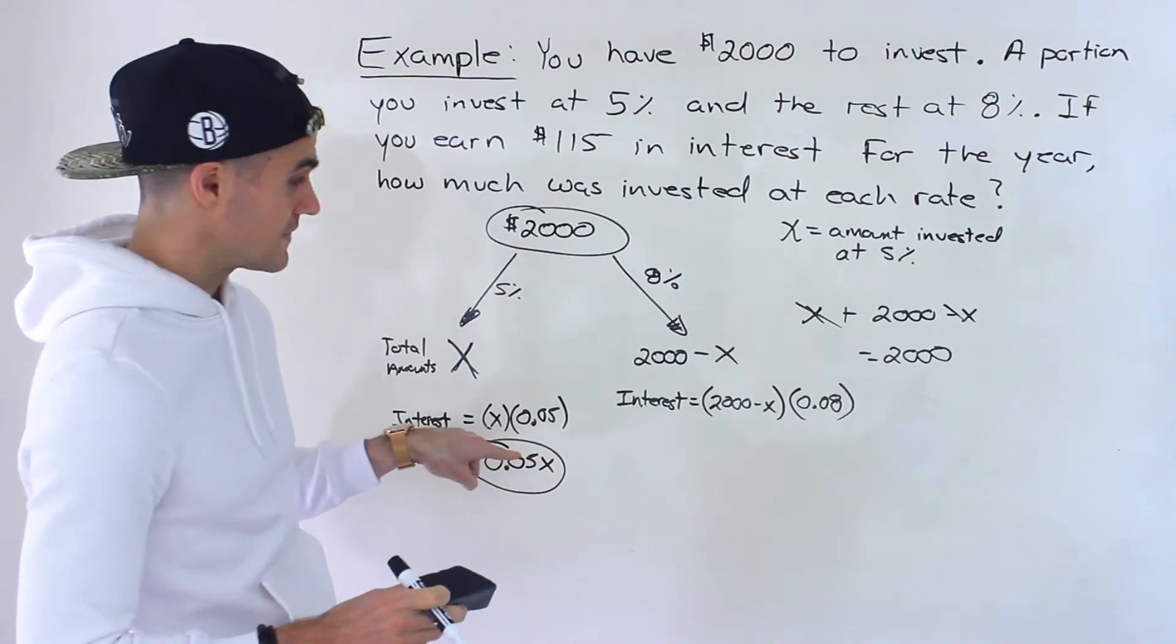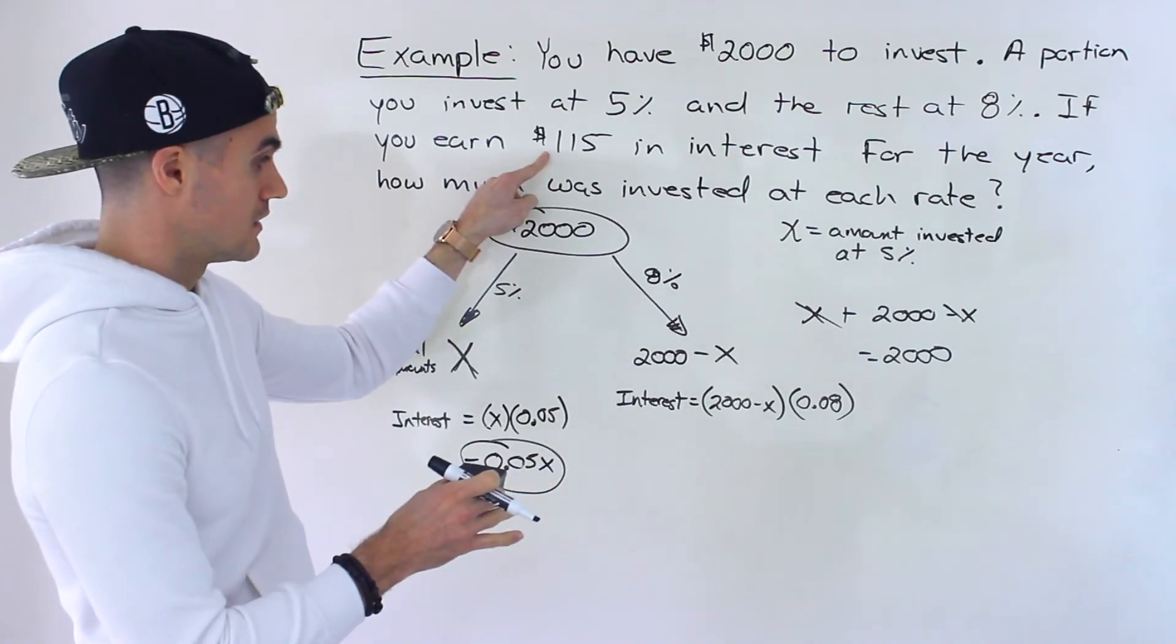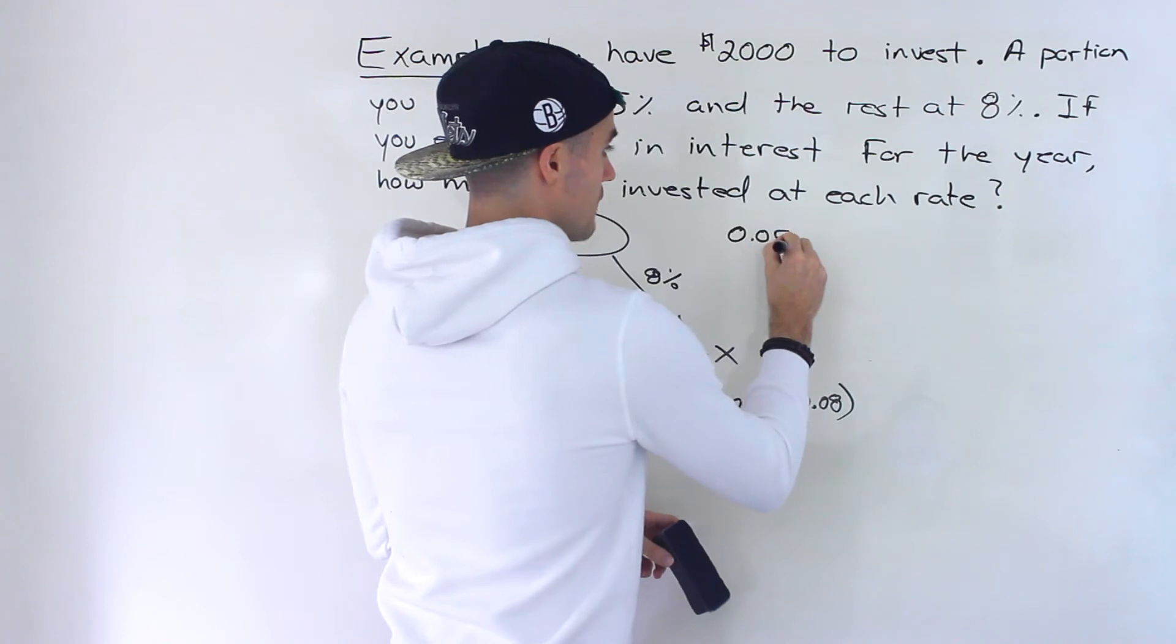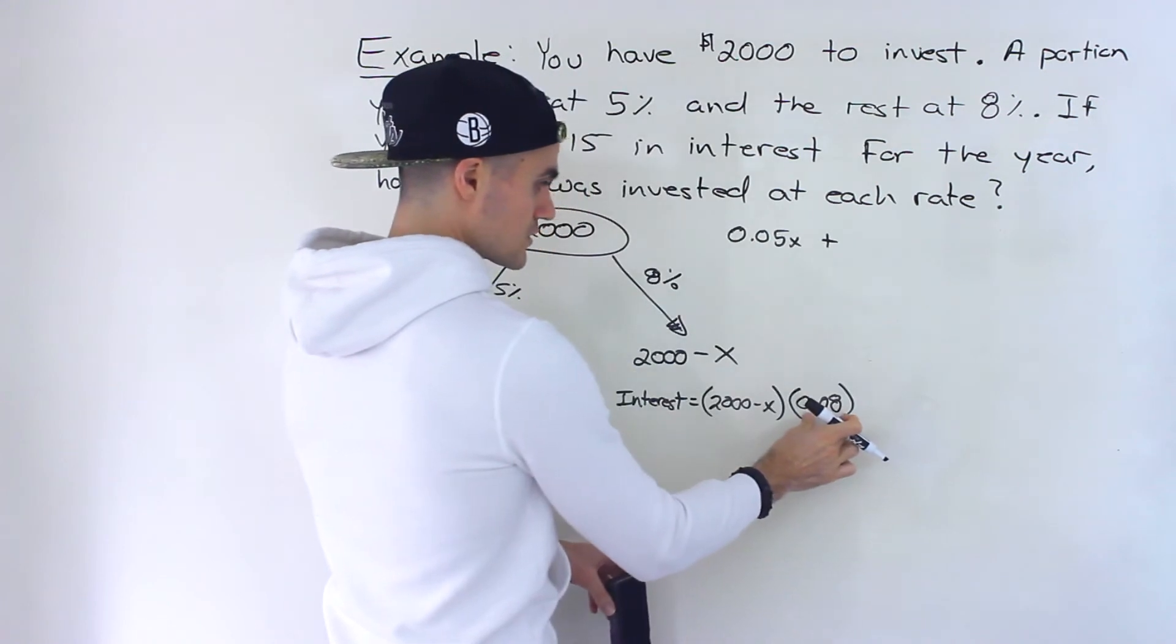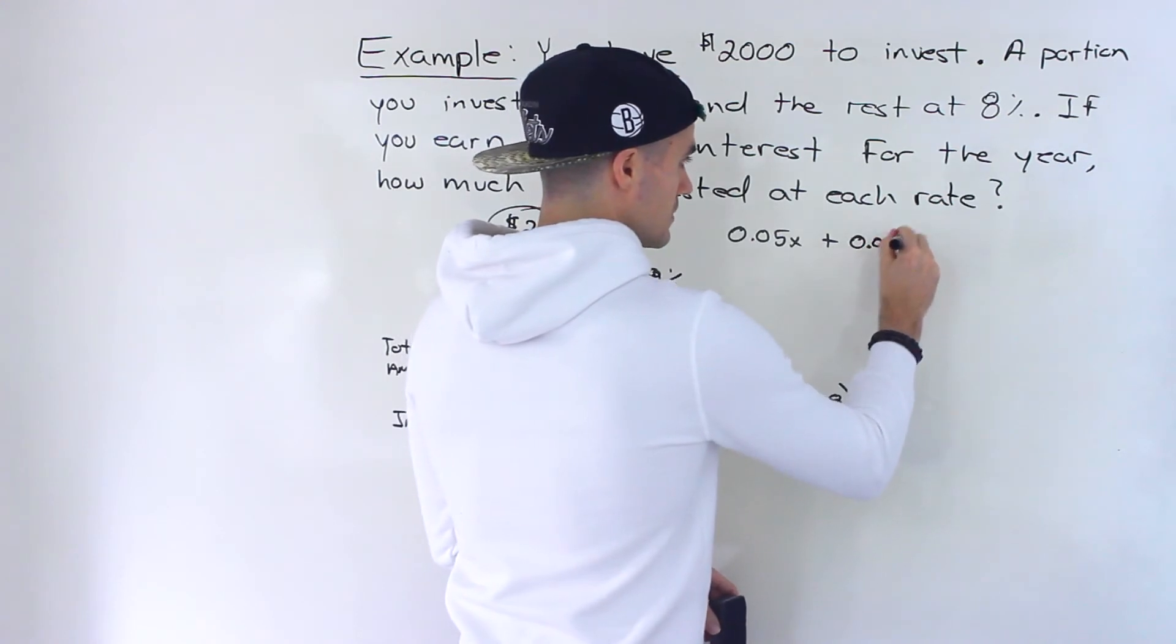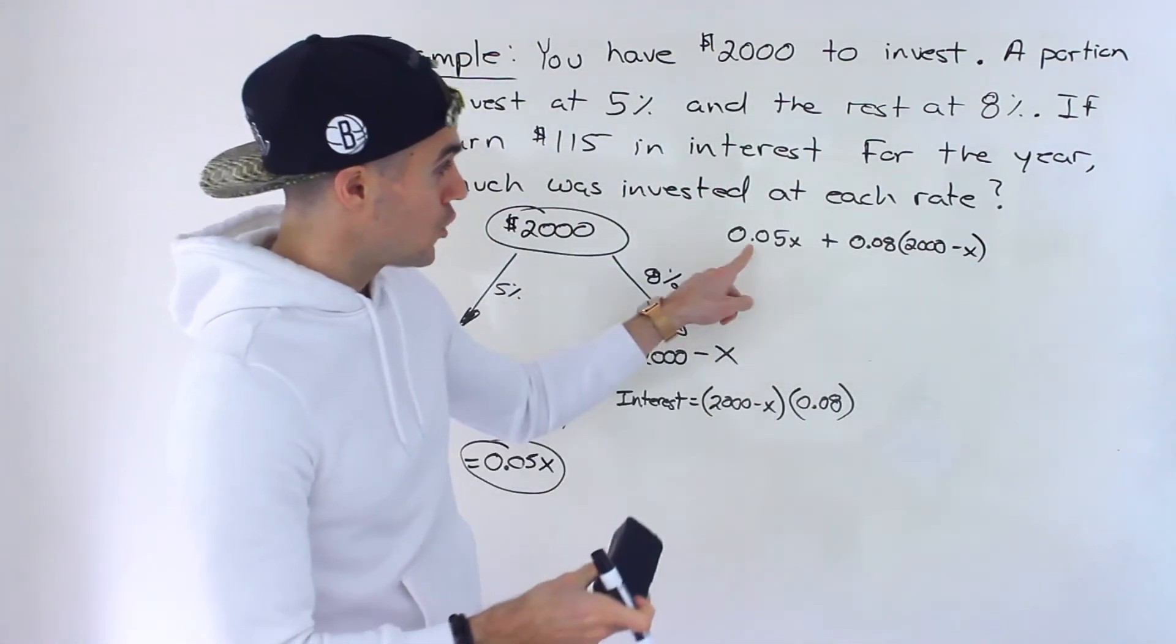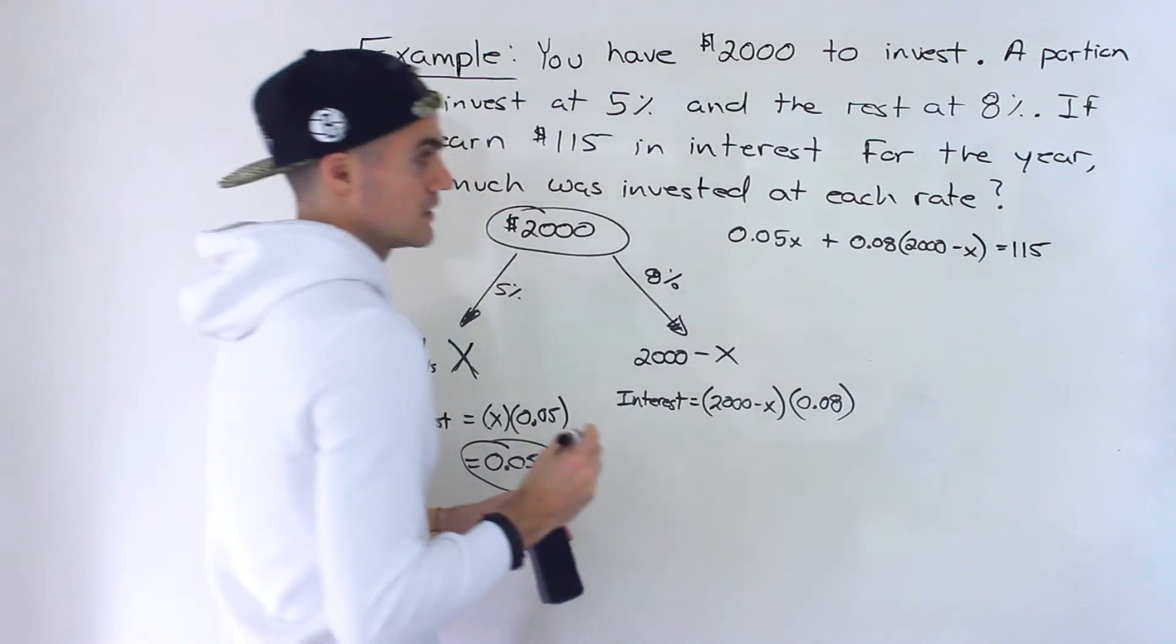But we're told that the sum of these, the total interest that's earned is 115. And so notice that we could create an equation with these. So what we can say is we could say 0.05X plus this amount. Now, actually, this 0.08, I'm going to bring in front. It just looks a little nicer when it's in front of the bracket like that. You don't necessarily have to, but this and this, they're the exact same thing. The total of these is going to be 115, like that.